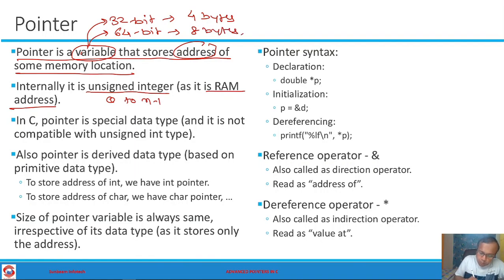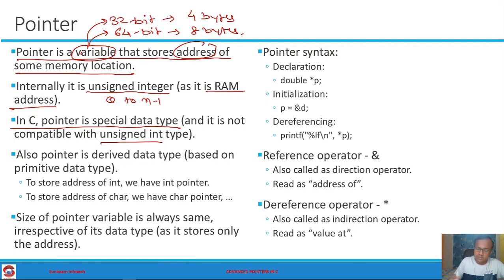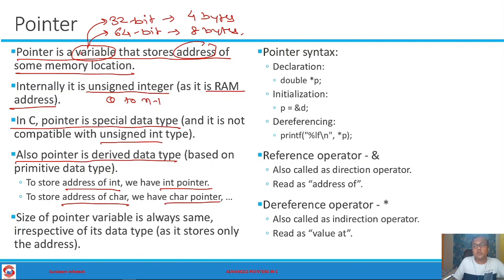In C language, the pointer is a special data type. Internally, even a pointer is storing just a number, but it is not an unsigned int data type — you cannot convert unsigned int to a pointer directly. The pointer is also a derived data type, meaning it is always built on top of some primitive data type. To store the address of an integer you need an integer pointer; to store the address of a character you need a character pointer; to store the address of a double you need a double pointer, and so on.